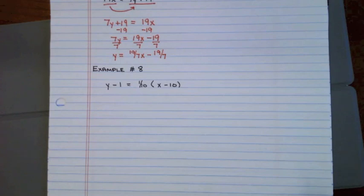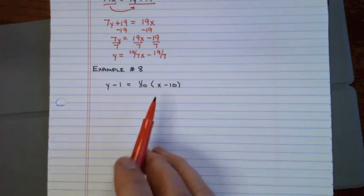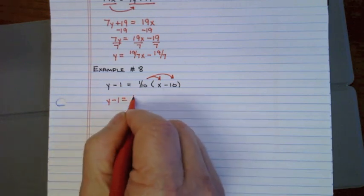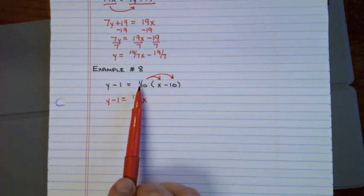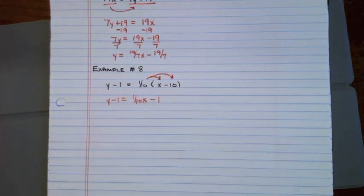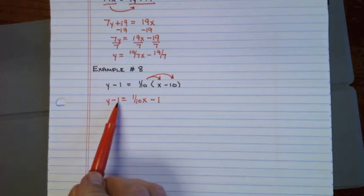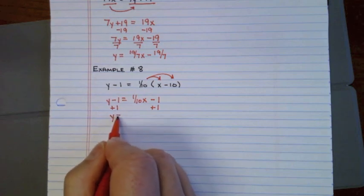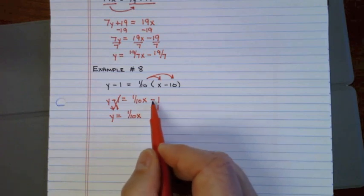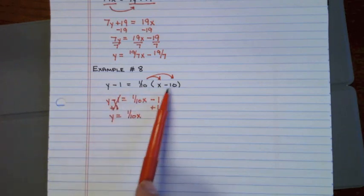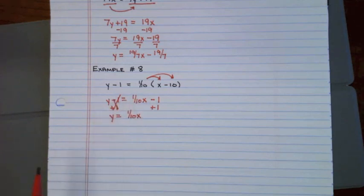Example eight has parentheses, so before anything else I use the distributive property. Y minus 1 equals 1/10 times X, which is 1/10 X, and 1/10 times negative 10 — negative 10 divided by 10 — is negative 1. Now to get Y by itself, the only thing to remove is the negative 1. The opposite of negative 1 is positive 1, so I add 1 to both sides. Y = 1/10 X, and negative 1 plus 1 is zero — I don't write zero — so Y = 1/10 X is in slope-intercept form.